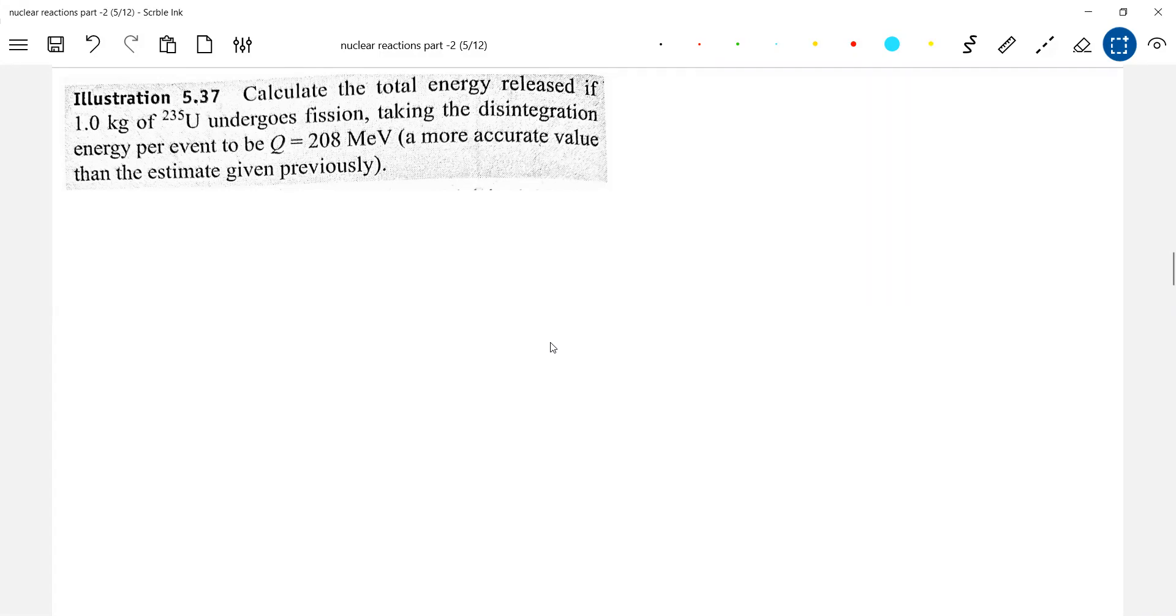Okay, I think similarly he has given Q. Calculate the total energy released if 1 kg of uranium undergoes fission. Earlier we did for 1 gram, now it becomes 1 kg, so the number of fissions will be 6.023.